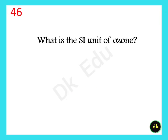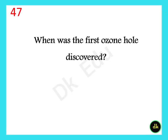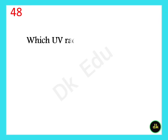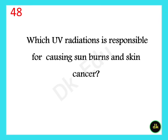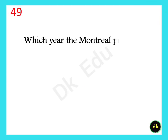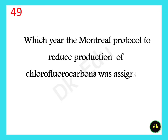What is the SI unit of ozone? The Dobson unit. When was the first ozone hole discovered? May 1985. Which UV radiation is responsible for causing sunburns and skin cancer? UVB. In which year was the modern protocol to reduce production of chlorofluorocarbons assigned? 1987.